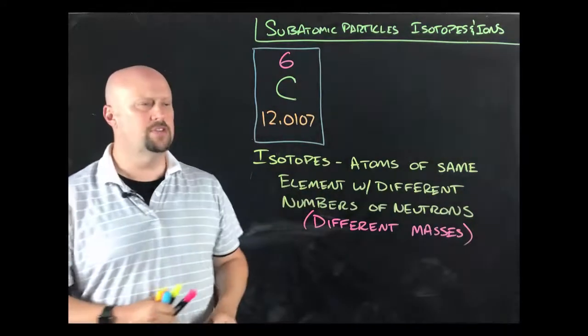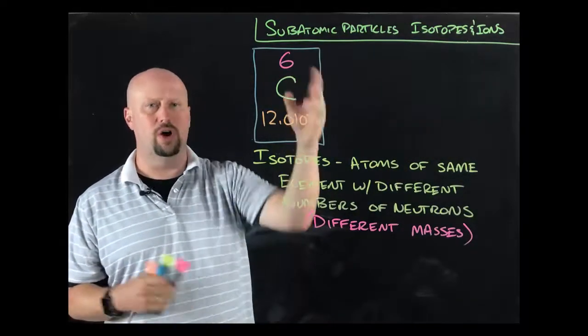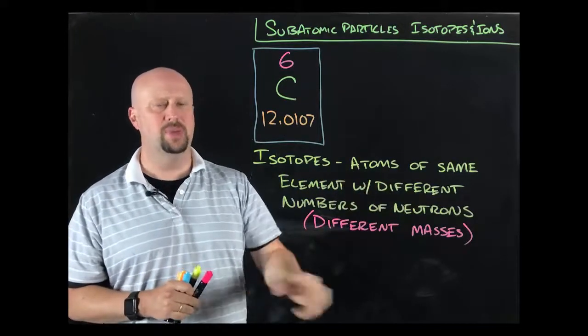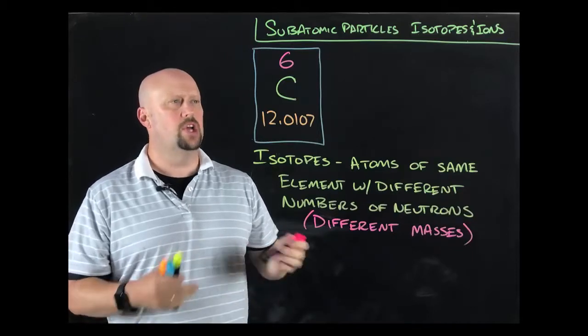We're going to start off talking about isotopes. Isotopes are atoms that are of the same element, so two carbon atoms, but that they have different numbers of neutrons, meaning that they're going to have different masses.